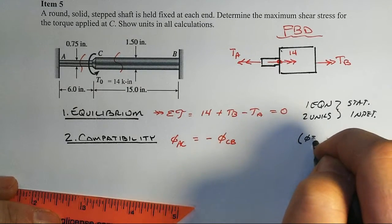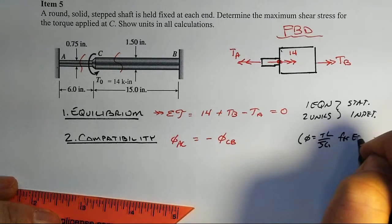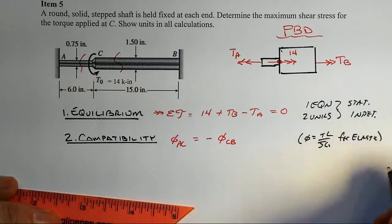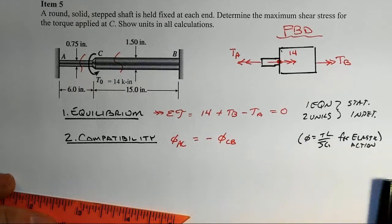Since we're going to assume elastic behavior, that means phi equals TL over JG for elastic action, then that's going to allow us to do some things here.